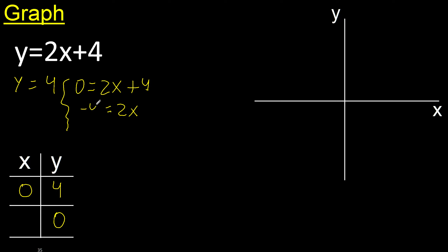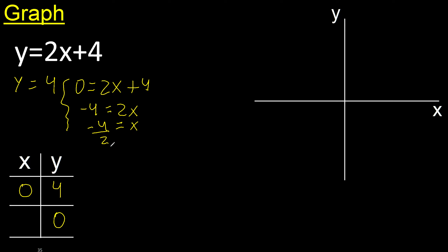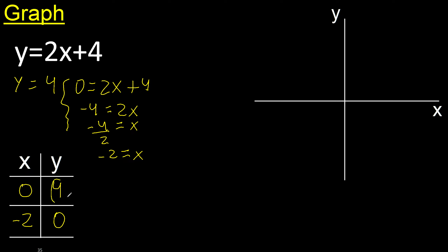Here change the sign. 2 multiplied, therefore divided. Minus 4 divided by 2 is 2. x is minus 2.